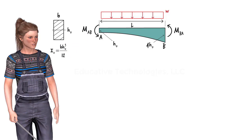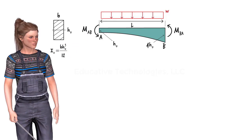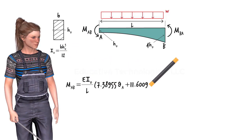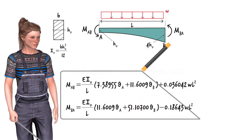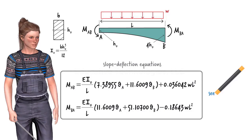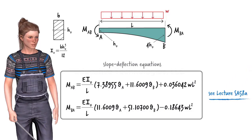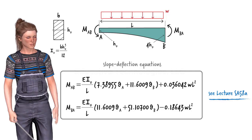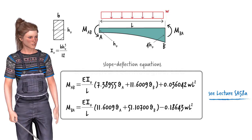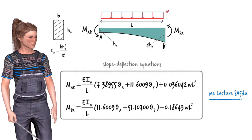For this particular beam segment, the revised slope-deflection equations are shown here. The derivation for these equations is given in Lecture SA58A. Please review it to familiarize yourself with the process of generating the slope-deflection equations for tapered beams.